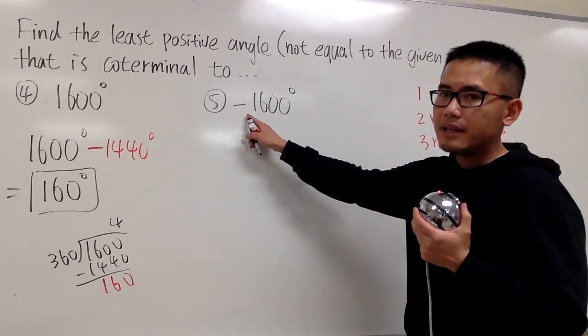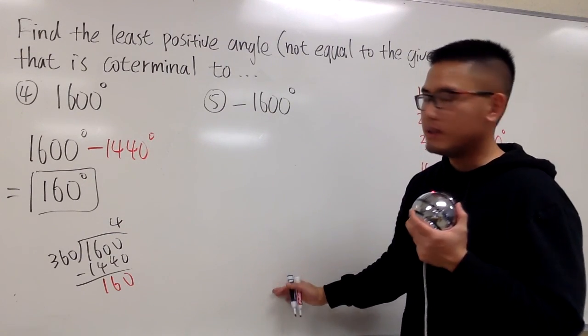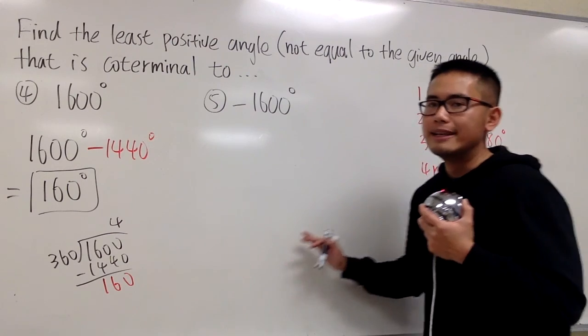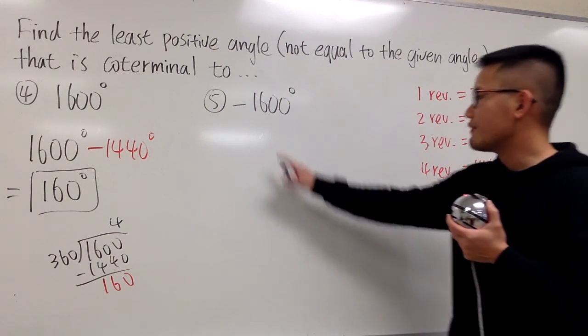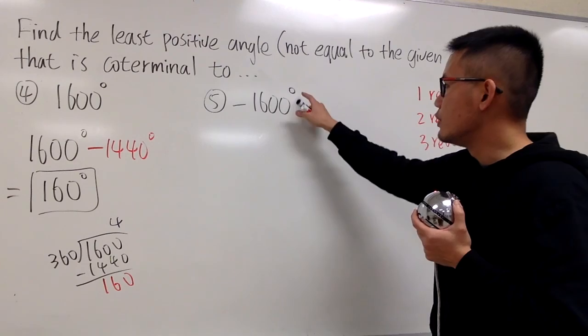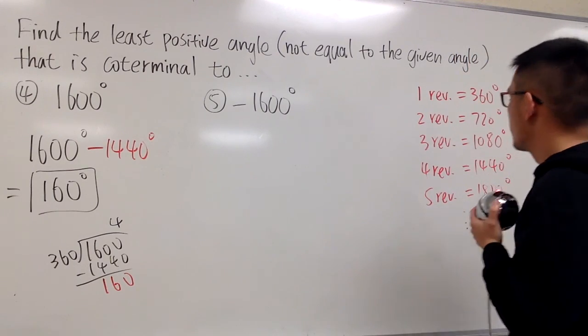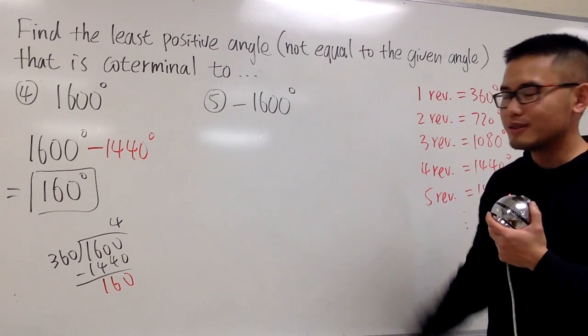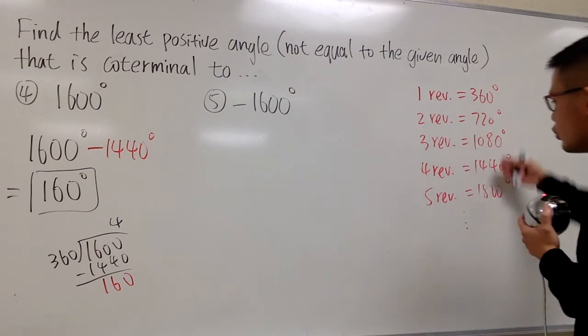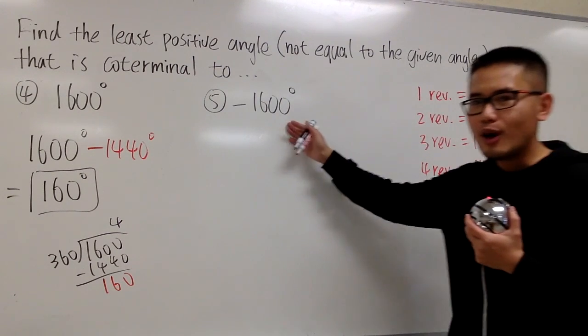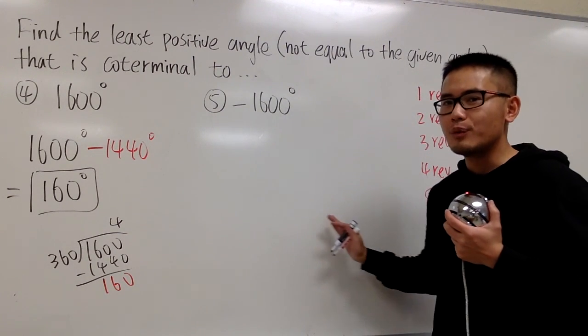So, keep in mind, the answer for this also has to be in between of 0 and 360 degrees. We have negative 1600 degrees already. So it's in a backwards turn. Which of this should I add so that the result will be in between of 0 and 360?